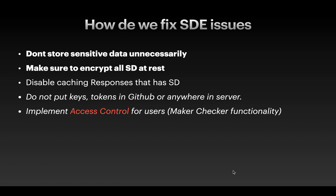Implement proper access control for users. One such functionality is known as maker-checker, commonly used in banking: the maker is the person with low privileges and the checker is the person with high privileges. If the maker is able to bypass those privileges and obtain the checker's higher privileges, bypassing this access control can also lead to sensitive data exposure issues.